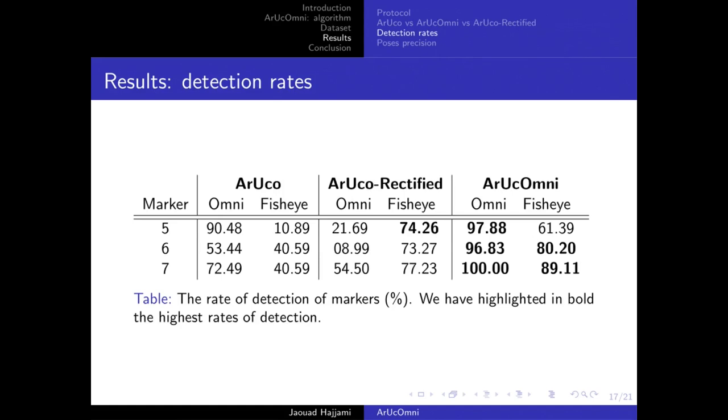The effectiveness of the proposed approach is shown with the comparison of the three methods in terms of the rate of marker detection. The proposed approach detects nearly 100% for catadioptric images. AruCo gets sometimes quite good results when the marker is not distorted, like when it is located around the center of the image. But overall, AruCo Omni outperforms the two methods in all situations.